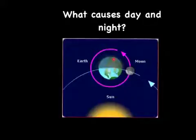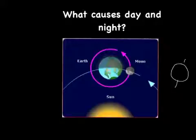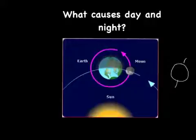You may notice that we have different amounts of daylight at different times of the year. This is because the Earth is tilted on its axis at 23 and a half degrees. As the Earth moves around the sun, the tilt towards the sun is different at different times of the year. In the summertime, the northern hemisphere is tilted towards the sun, so we get longer days and shorter nights. In the wintertime, the northern hemisphere is tilted away from the sun, so we get less daylight and more darkness.